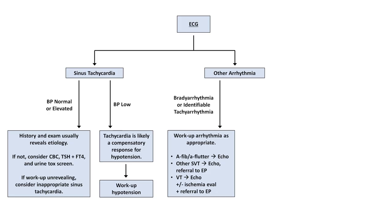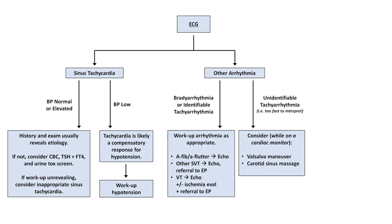Now, what if the ECG shows an arrhythmia that is so fast that one really can't say what its mechanism is? Well, if the atrial activity is unclear, a Valsalva maneuver or carotid sinus massage can terminate some arrhythmias such as AVNRT and AVRT, and can slow down AV conduction enough to reveal hidden atrial activity in atrial flutter and some atrial tachycardias. If neither of these is successful, administration of adenosine can be considered. Adenosine is a very quick-acting medication whose primary effect on the heart is to induce AV block. After being pushed, it has a typical duration of action of only 5 to 10 seconds, but during those seconds the patient will experience cardiac standstill in which their heart is literally not beating at all. This can cause a very brief but highly uncomfortable sensation for the patient.